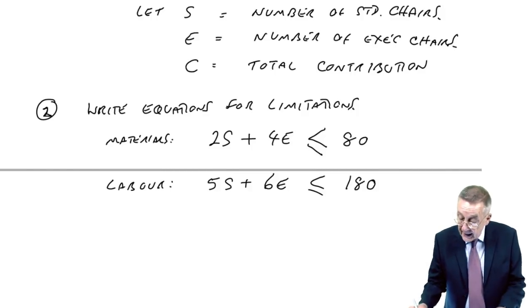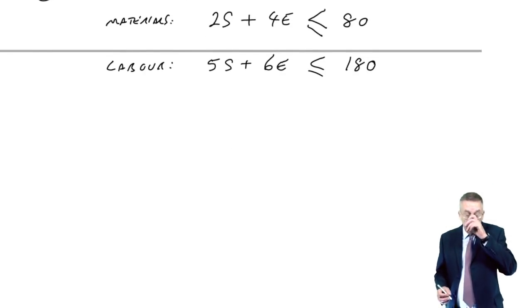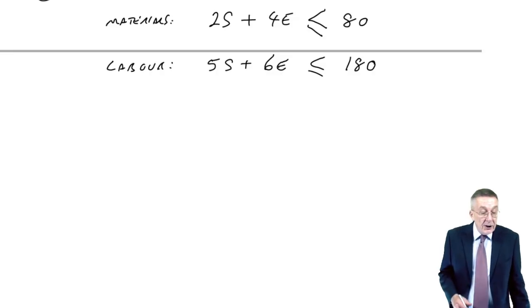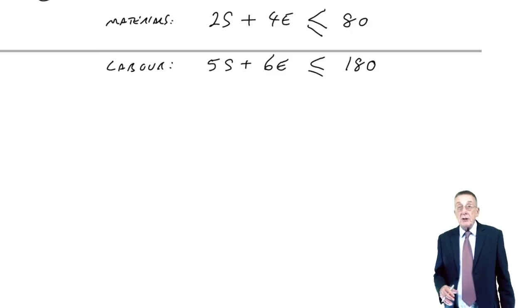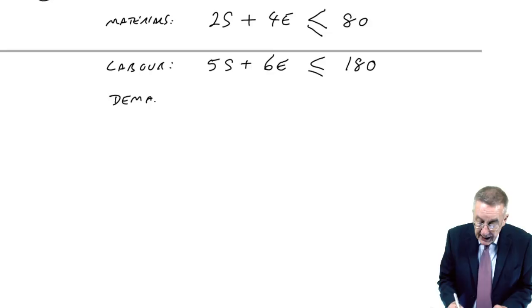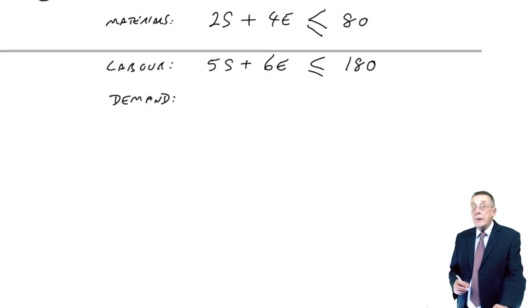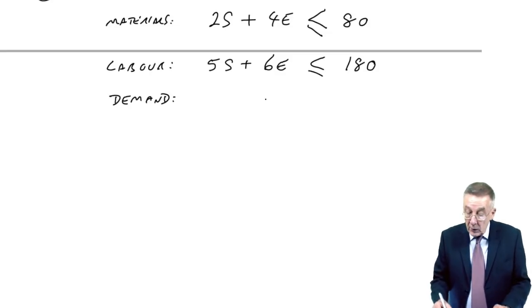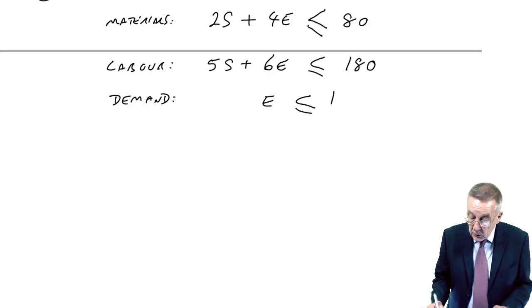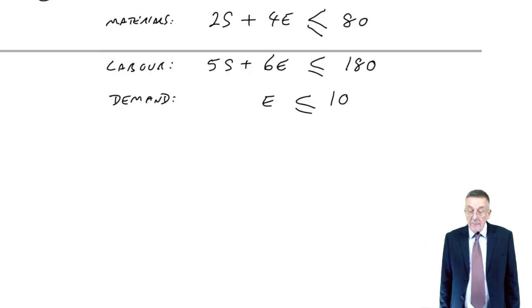Any other limitations? There could be any number of these. I doubt in the exam we'd have many, but there could be. The only other limitation is the demand. For standard chairs, unlimited, so no restriction on the S's we could sell. But for executive chairs, the maximum is 10 that we can sell. So clearly, there's no point in producing more than 10. E must be less than or equal to 10.